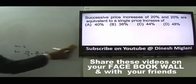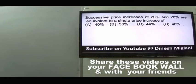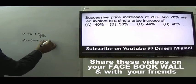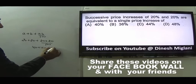Question 12: Successive price increases of 44%. Using the formula for successive percentages: A + B + AB/100 = 20 + 20 + (20×20)/100 = 40 + 4 = 44%. Answer is C.